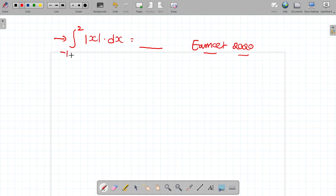Let us go to the problem. Integral minus 1 to 2, modulus x dx. Let us go for the solution. First, we're given integral minus 1 to 2, modulus x dx.